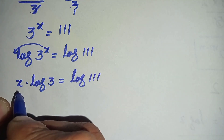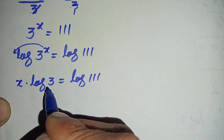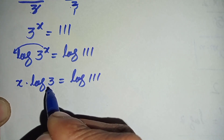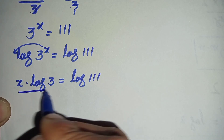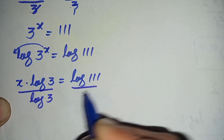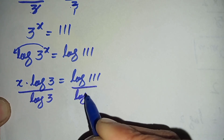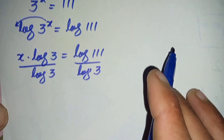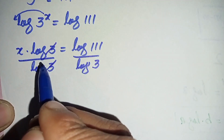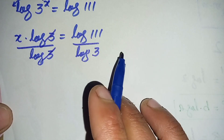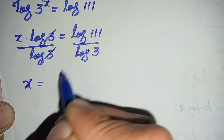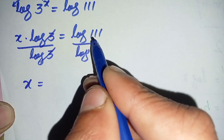Now since we need to find the value of x, we will try to eliminate log of 3 from the left hand side. To eliminate it, we will divide both sides by log of 3. This log of 3 and this log of 3 will cancel with each other, so only x will be left here. So x is equal to log of 111 divided by log of 3.